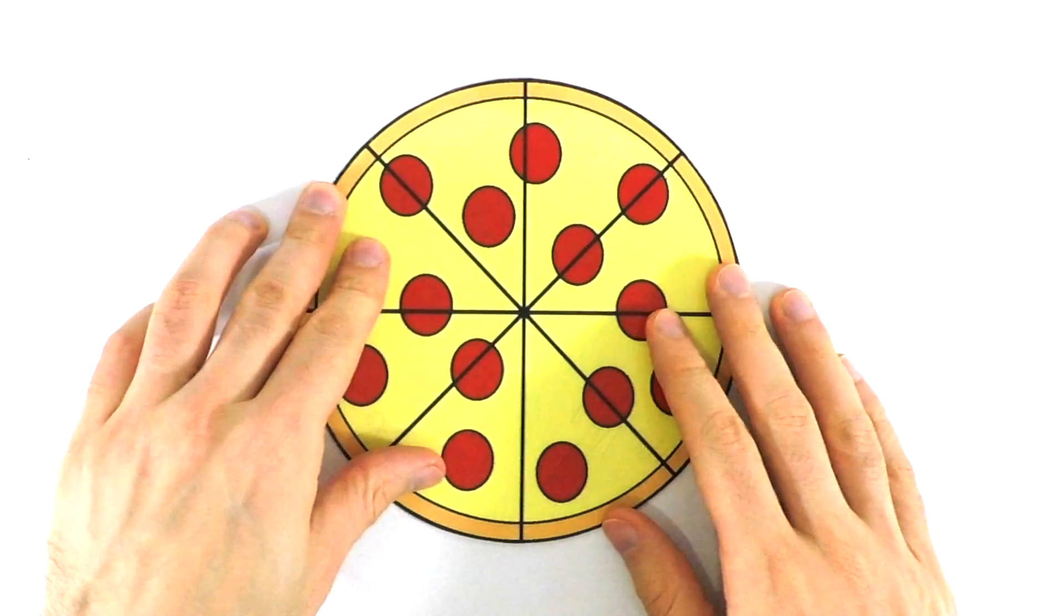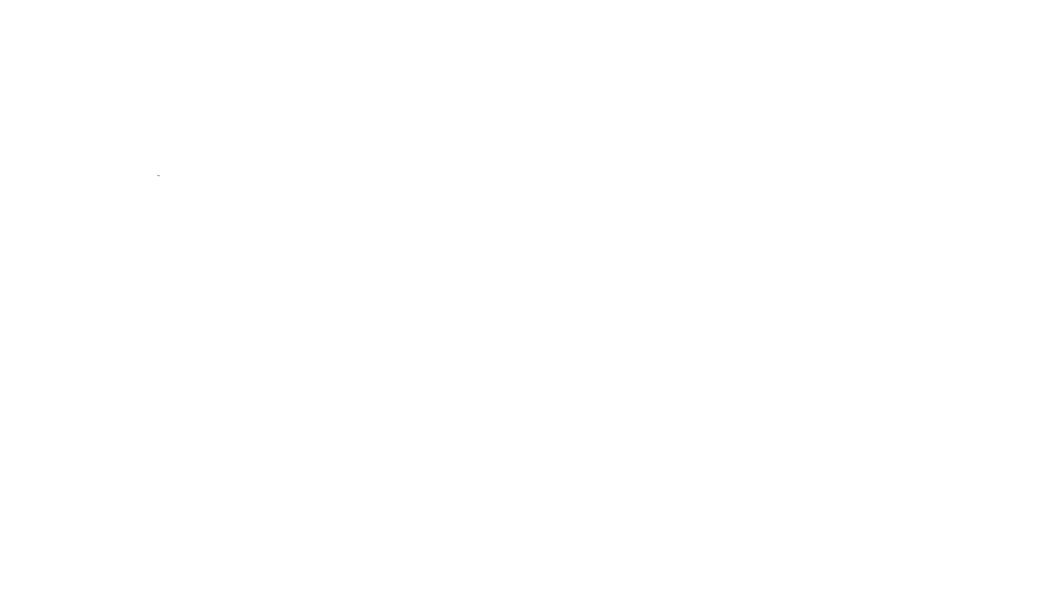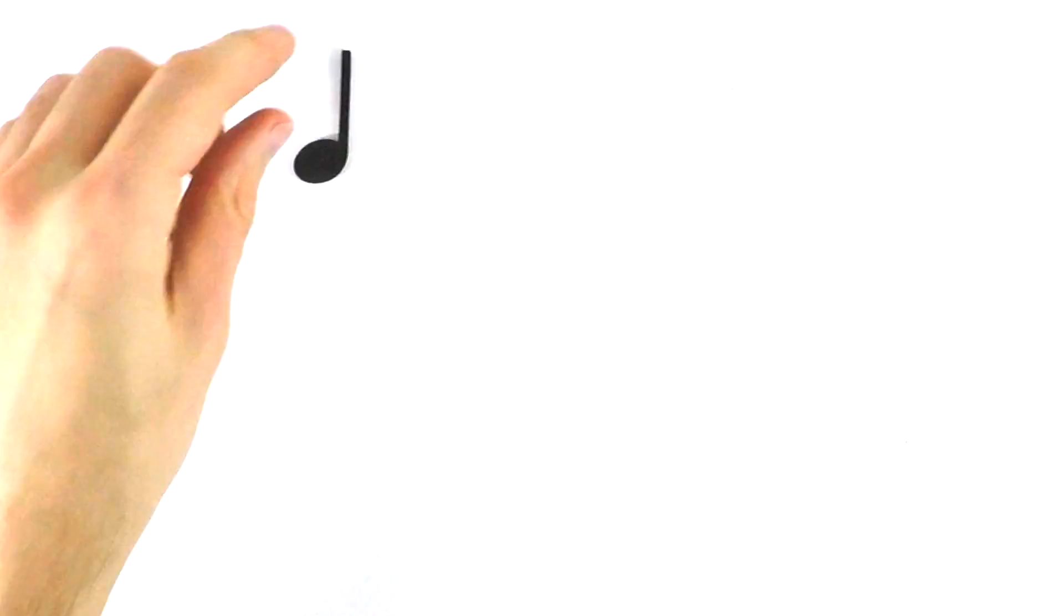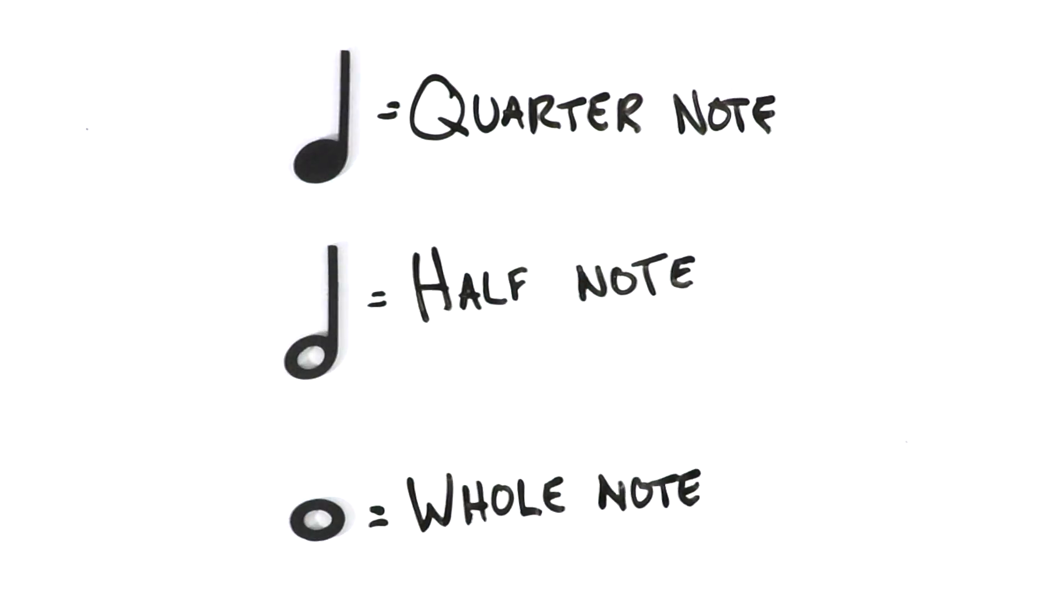So in our last episode we talked about our pizza and slicing our pizza up into half pizzas, quarter pizzas, and leaving it as a whole pizza. We also talked about how all of that relates to our quarter notes, half notes, and whole notes.